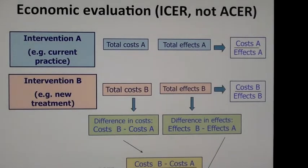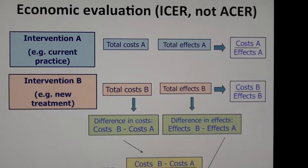We have intervention A and intervention B, and we know the total costs of A and the total effects of A, and the same for B. When we talk about total costs, we're talking everything in, including the price tag of the drug, as well as the costs induced by its side effects, hospitalizations, and other resource utilization within the healthcare system. The types of costs that we put into total costs for A and B really depends on the perspective of the economic analysis that we're undertaking.